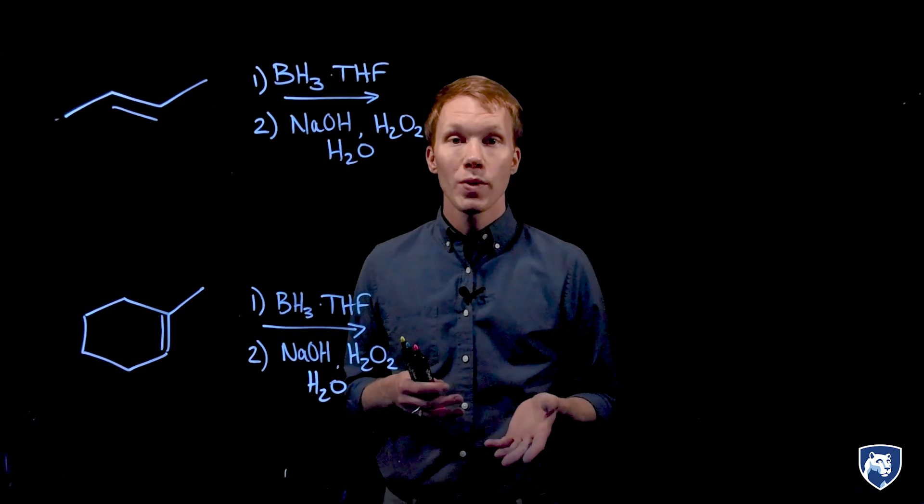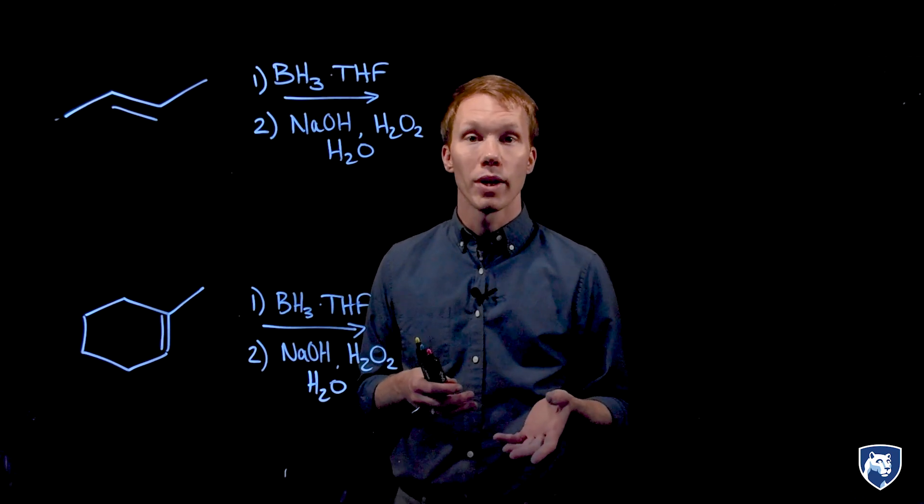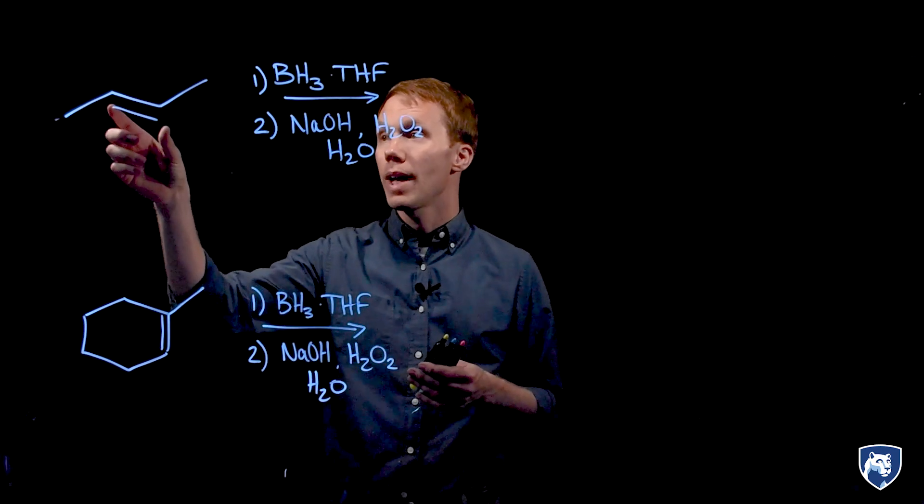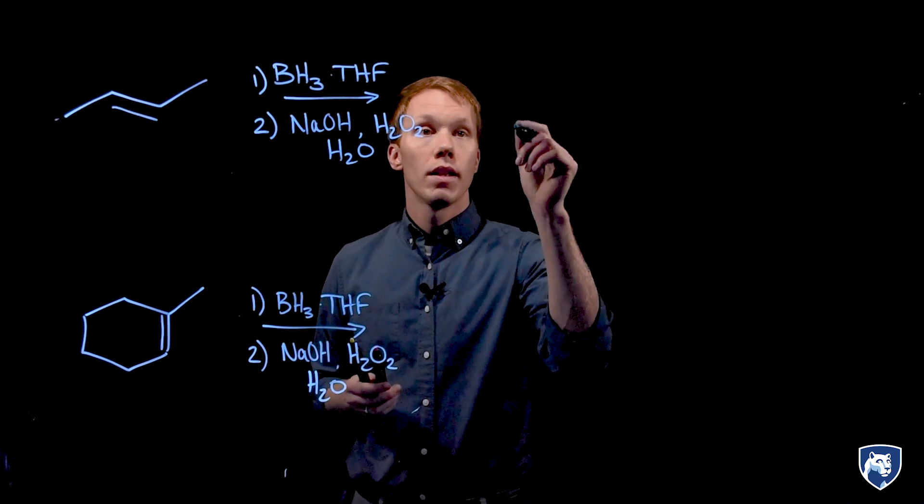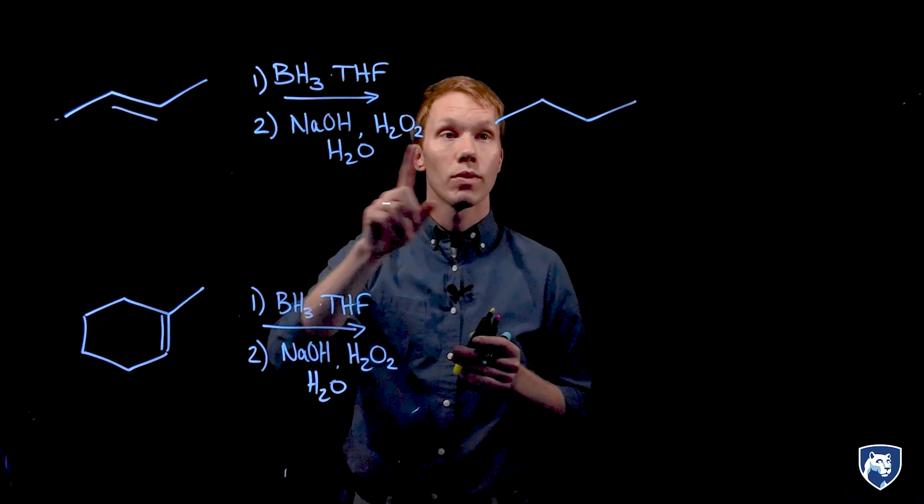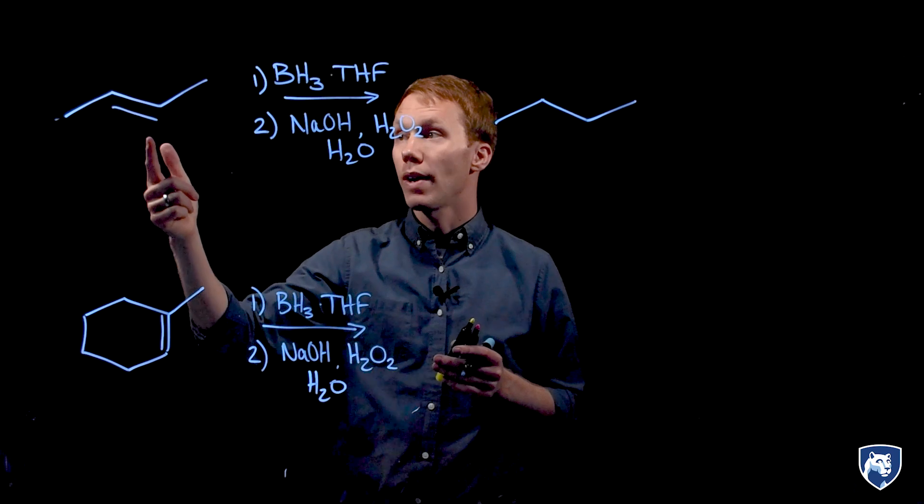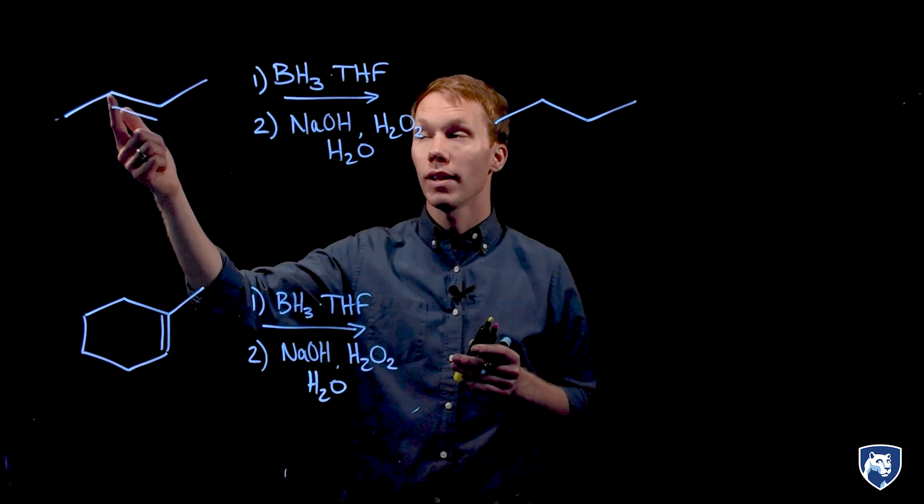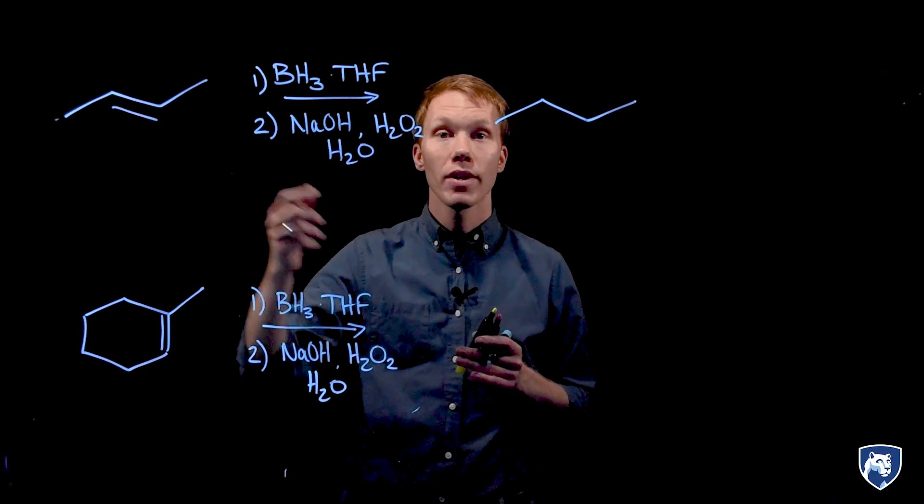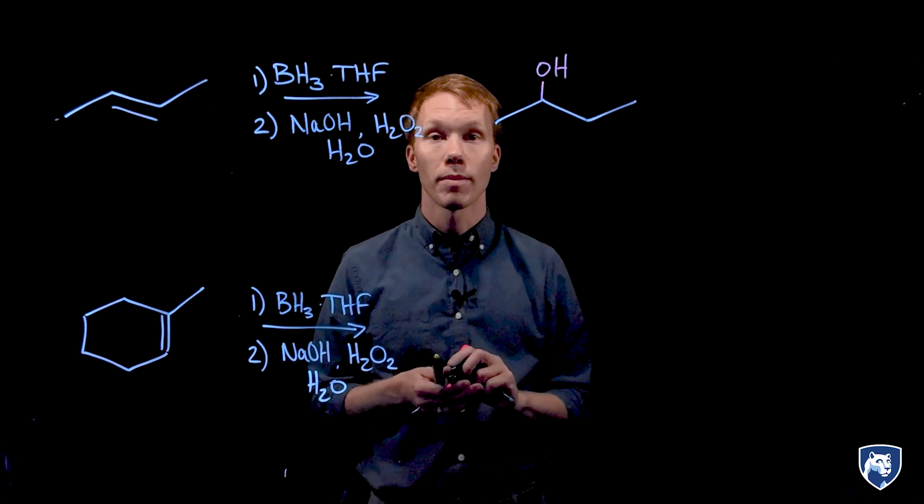Let's look at some experimental data to further understand the regio and stereochemical outcomes of the hydroboration oxidation. In our first example, we have 2-butene. This alkene is equally substituted on both ends. We have a secondary carbon and a secondary carbon. It is also a symmetrical alkene, so adding my OH to the one side or the other does not change the product. It is one constitutional isomer.